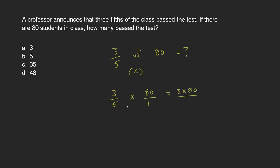So three times 80 over the bottoms, multiplied as well, five times one. Three times 80 is 240, five times one is five.